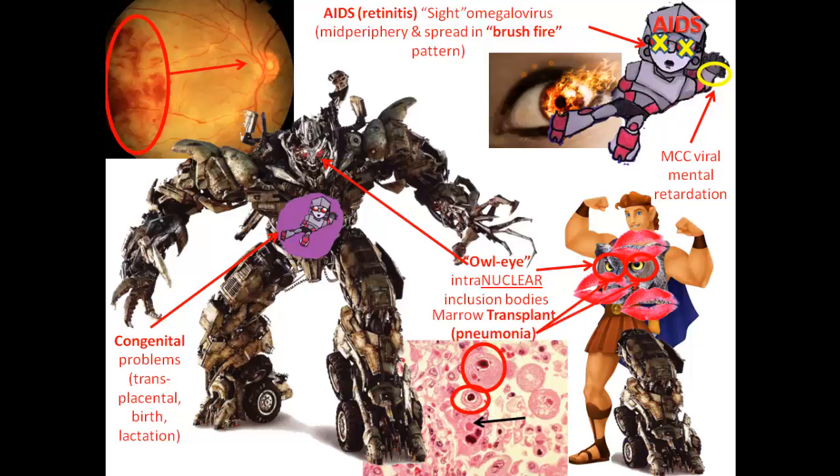One more thing: marrow transplant patients who get transplants usually get pneumonia. People with AIDS usually get retinitis — it doesn't usually cross over. To remember this, Hercules has a transplanted leg, so he's getting pneumonia. There are also two eyes over his chest to symbolize the two lungs for pneumonia.